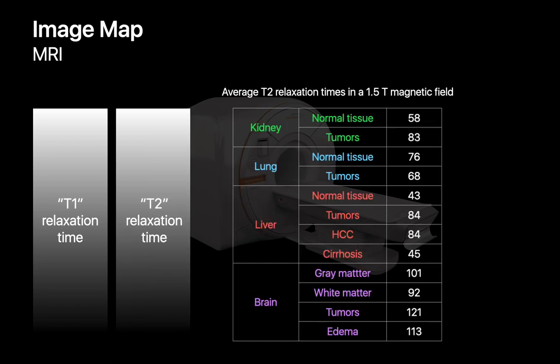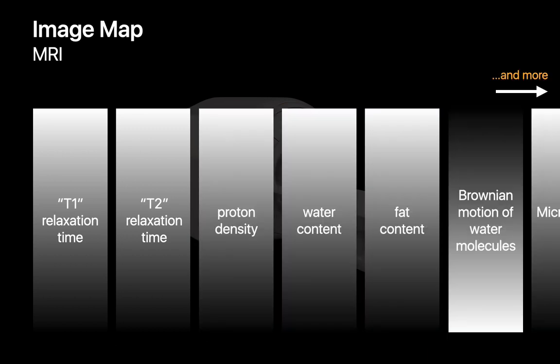MRI machines can also create T2 relaxation time maps of the body. T2 relaxation time is a different inherent property of matter. In fact, MRI machines can create image maps of many other properties too, like proton density, water content, fat content, or the amount of Brownian motion, and the list goes on.